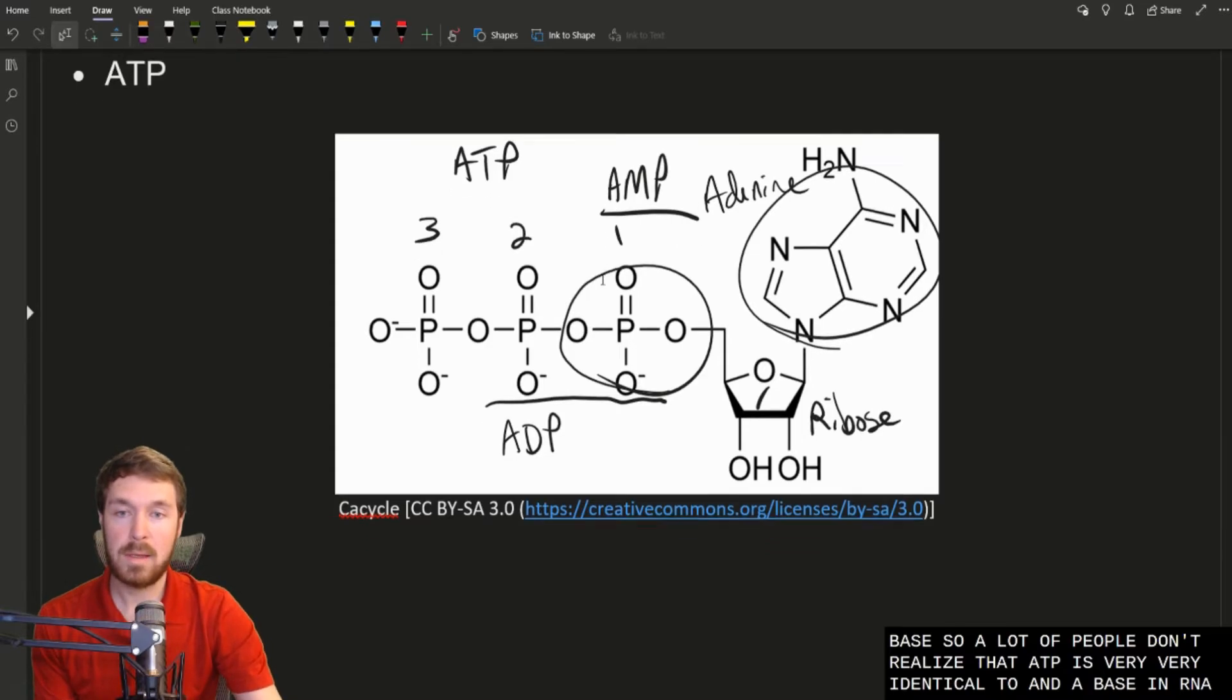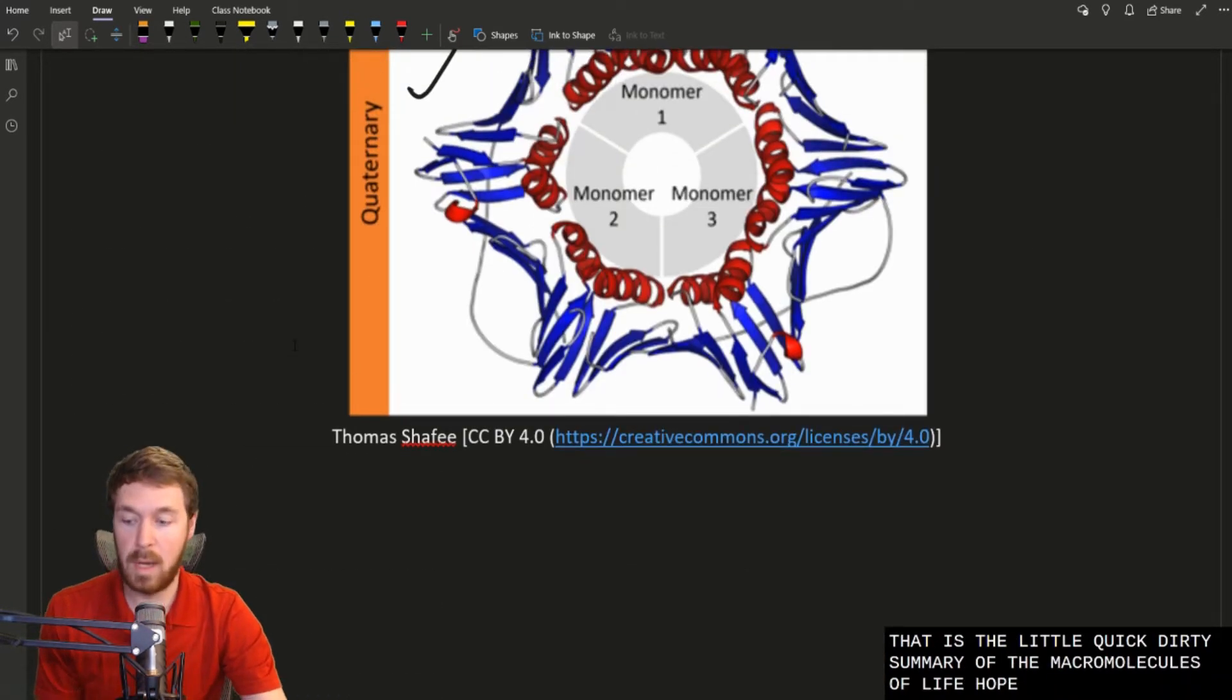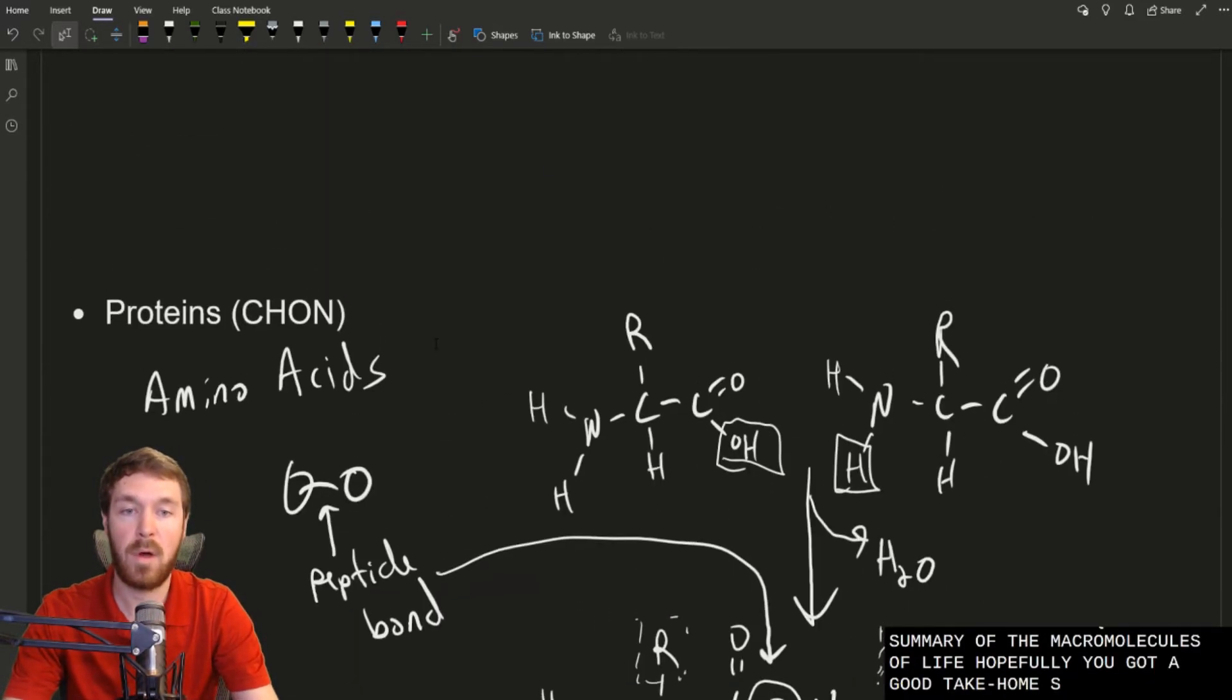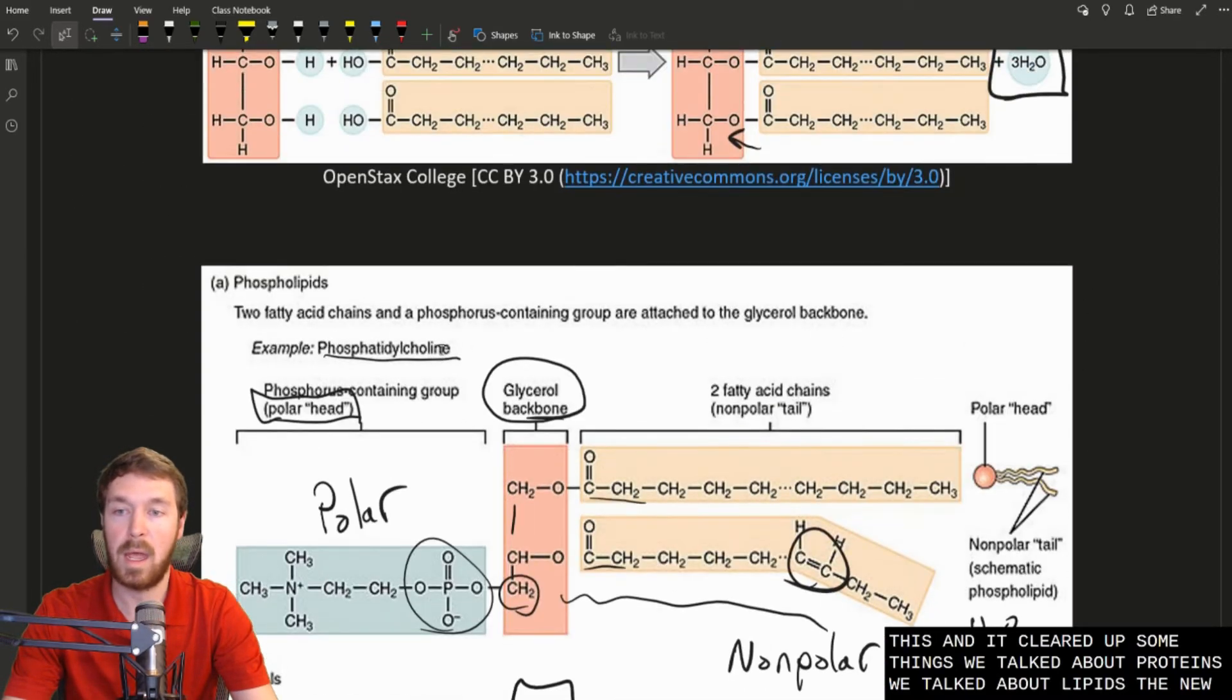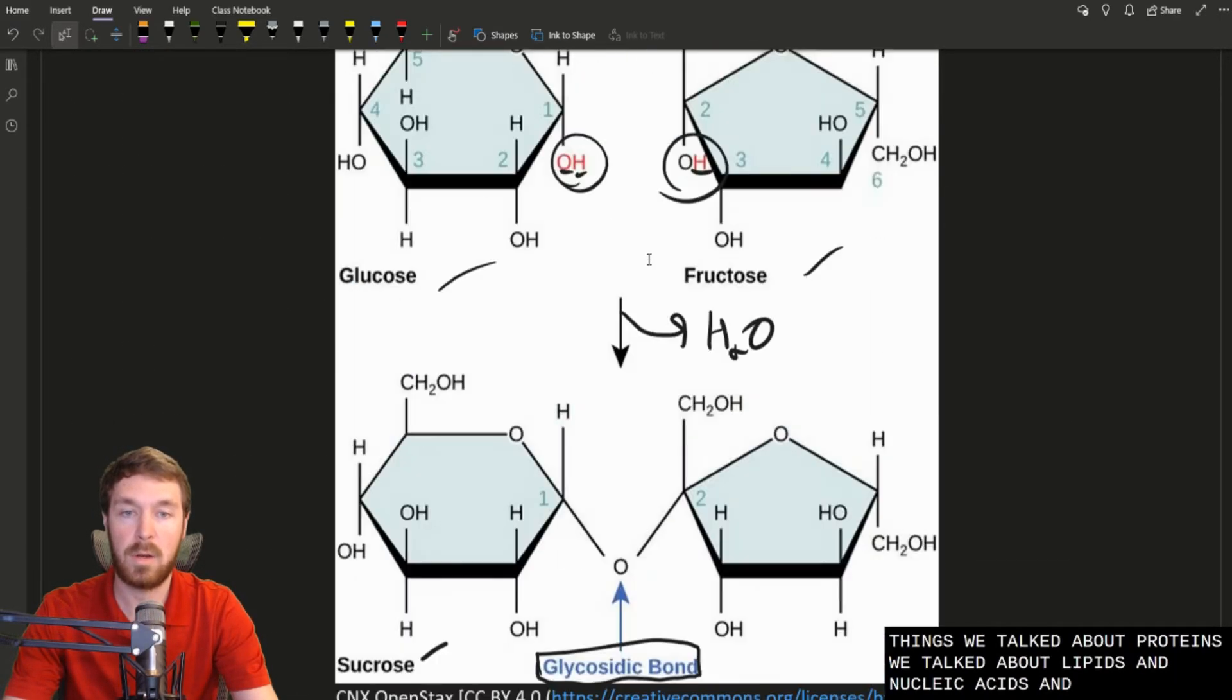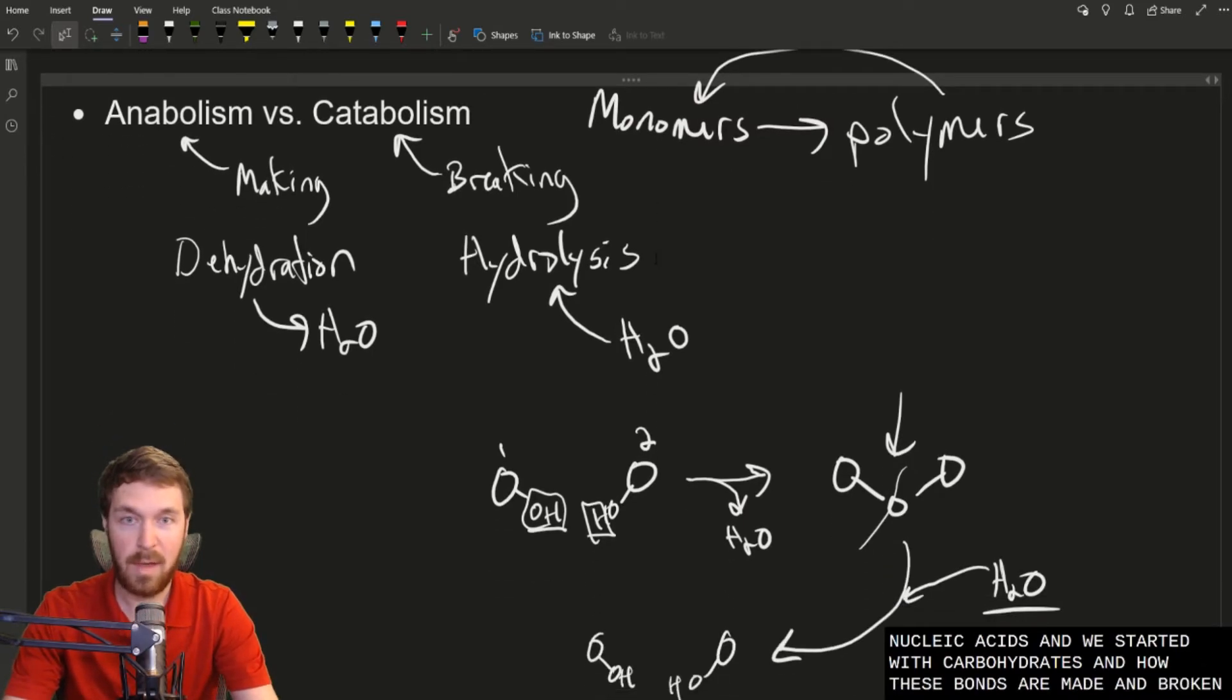That is the little quick and dirty summary of the macromolecules of life. Hopefully you got a good take-home message from all this and it cleared up some things. So we talked about proteins, we talked about lipids, the nucleic acids, and then we started with carbohydrates and how these bonds are made and broken.